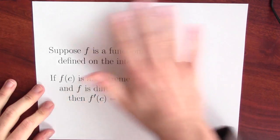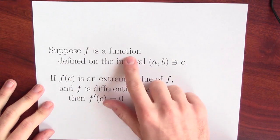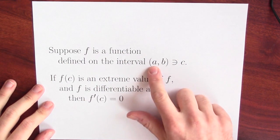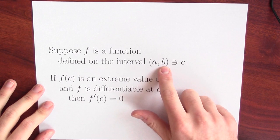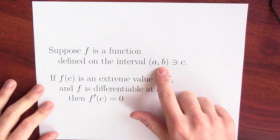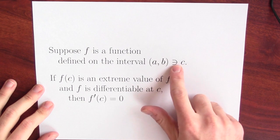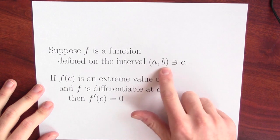If we care about extreme values, it would really help to know how to find them. We can use a theorem — a theorem of Fermat's. Here's Fermat's theorem. Suppose f is a function and it's defined on the interval between a and b. C is some point in this interval. This backwards e means that c is in this interval.